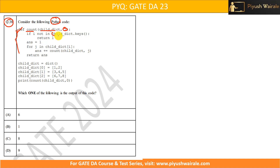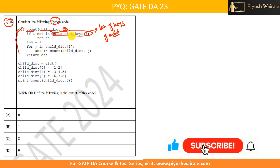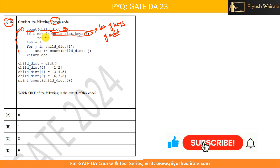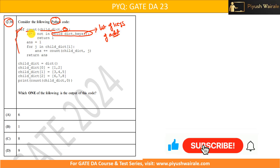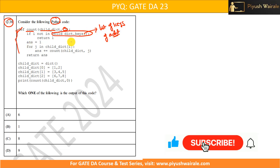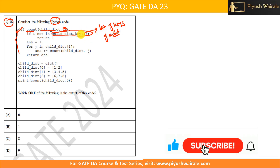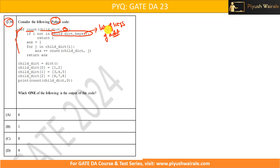If i not in child_dictionary.keys — this particular thing dictionary.keys will give me the list of keys of a dictionary. I hope you all know what a dictionary is. Please watch my previous videos based on dictionary, how if statement works, how for loop works, and what are the operations in the dictionary. So this is basically a list of keys of a dictionary.